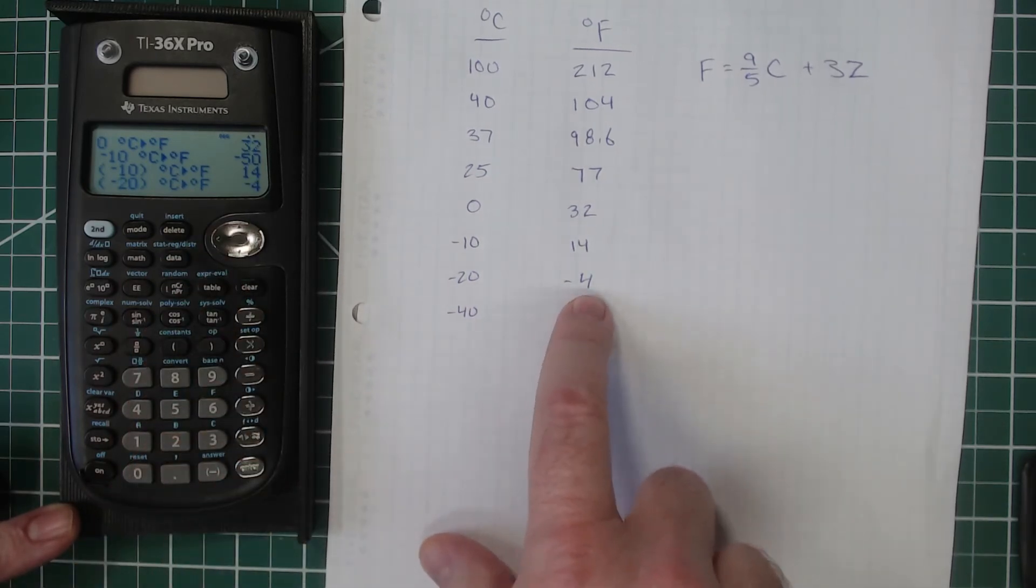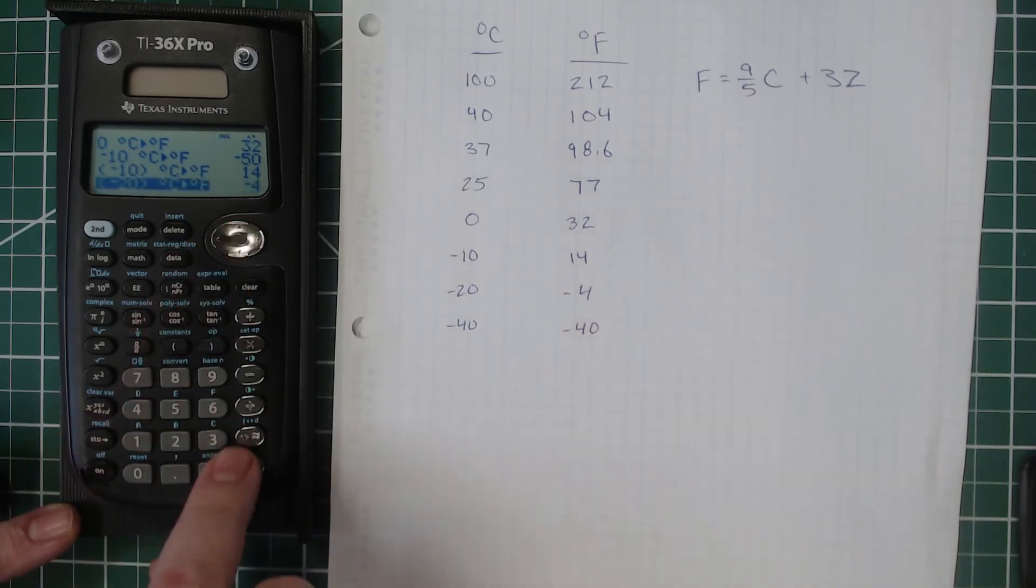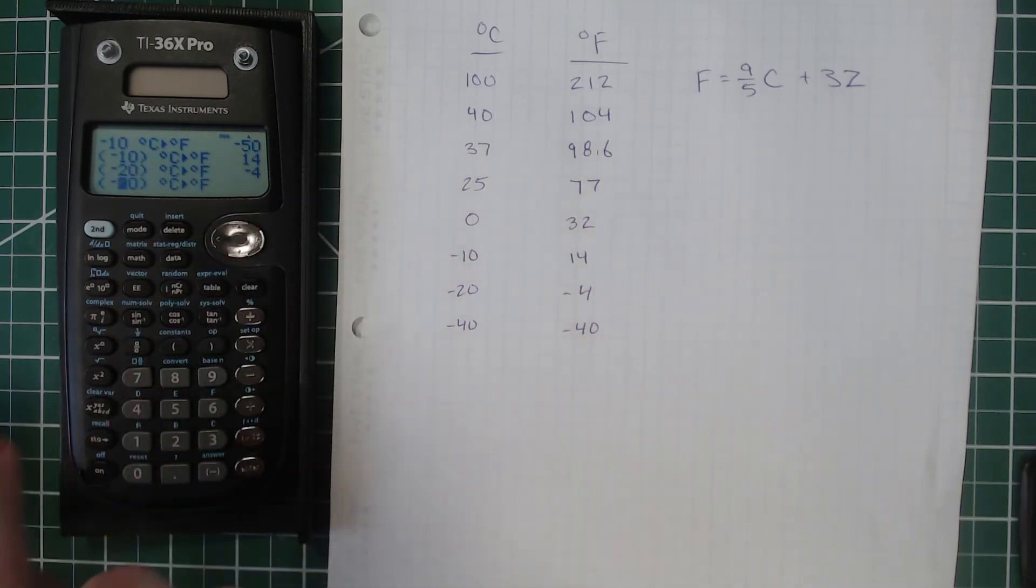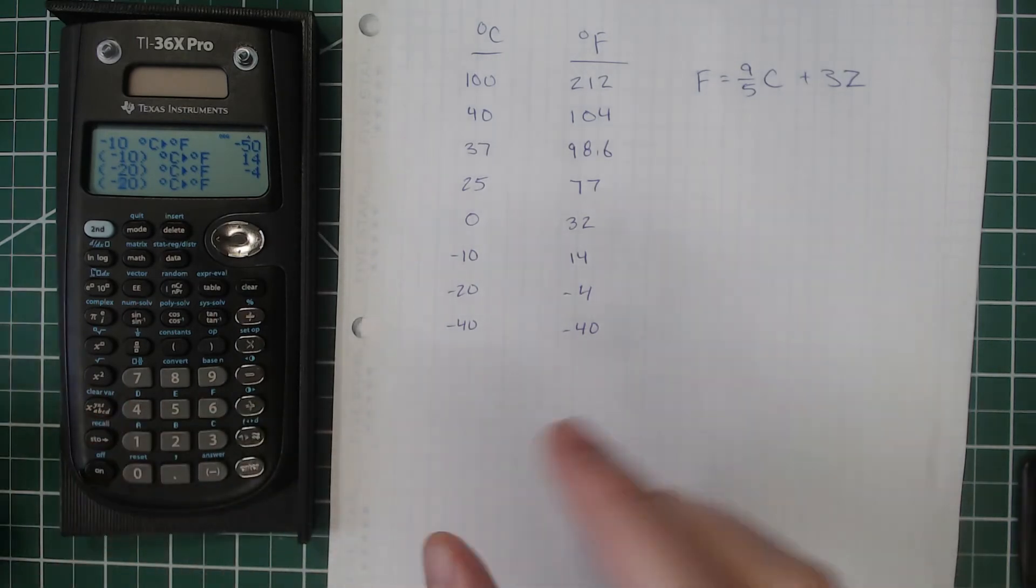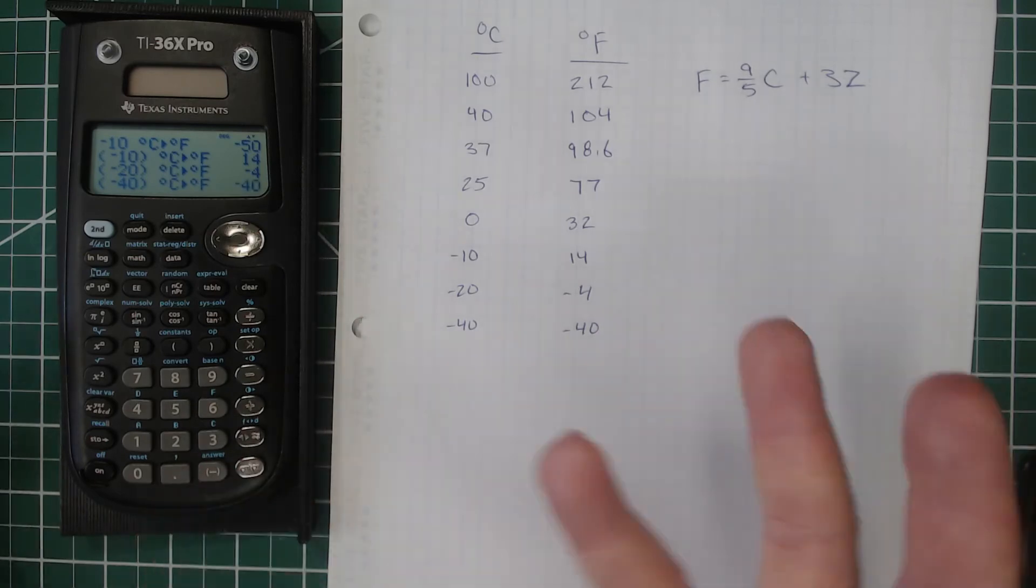So -4. You see it does go into the negatives there. And then we'll do -40. And of course, -40, you may or may not know this. Negative 40 is the one place where the Fahrenheit scale and the Celsius scale come up with the same number. So -40 is going to give us -40.